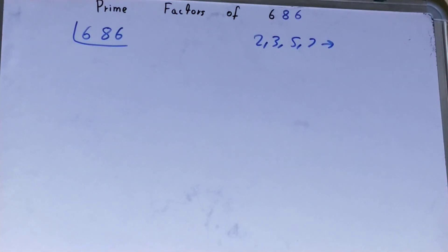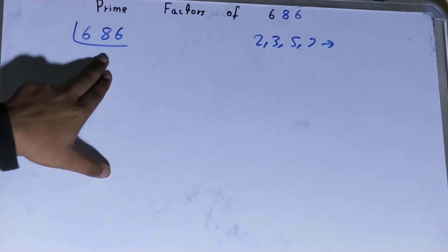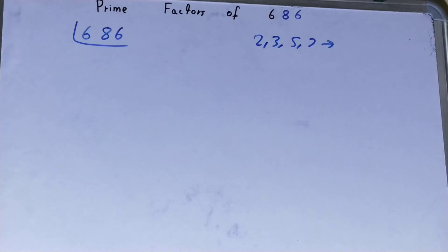We'll start with the lowest prime number we have, that is 2. Is 686 divisible by 2? Yes it is, because 686 is an even number. So divide it and you will be left with 343.